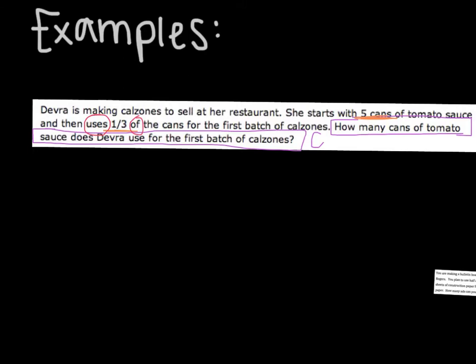So now, step number four. I'm going to take all the things that I've underlined, circled, and boxed, and I'm going to write an expression, equation, or inequality that will help me solve this problem. She uses one-third of the cans. And I know that 'of'...